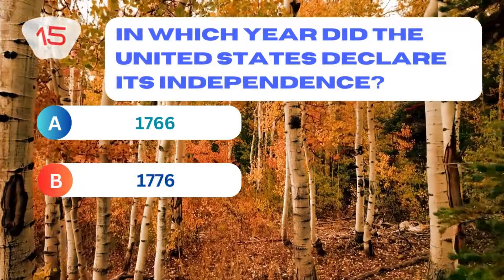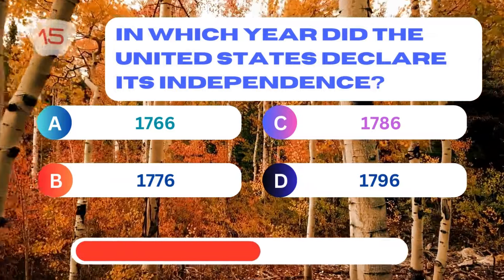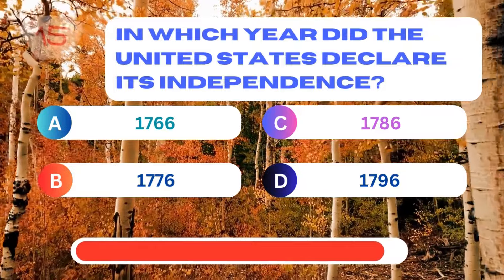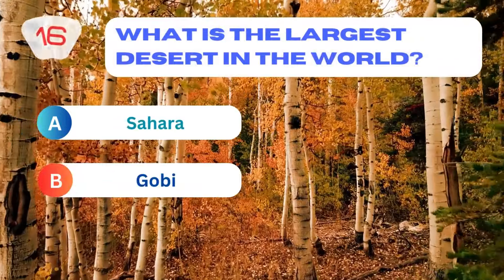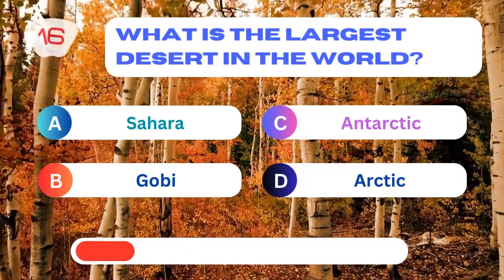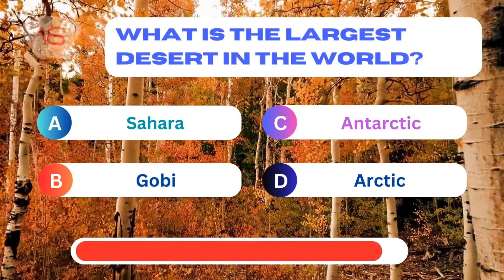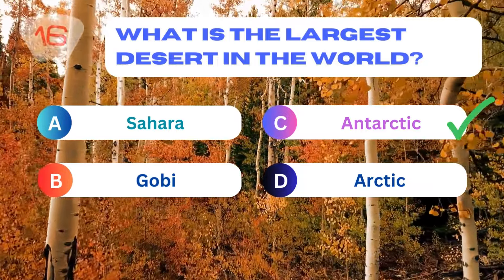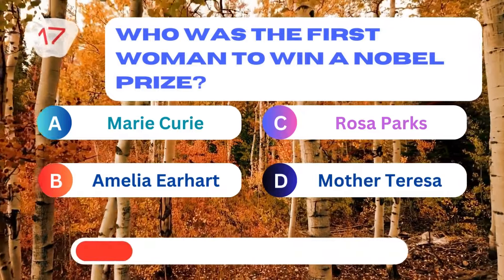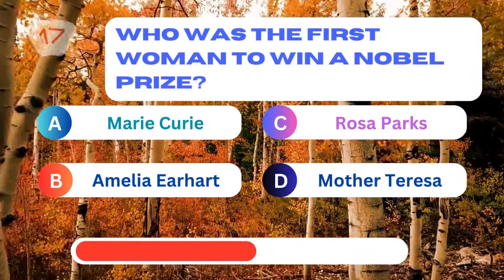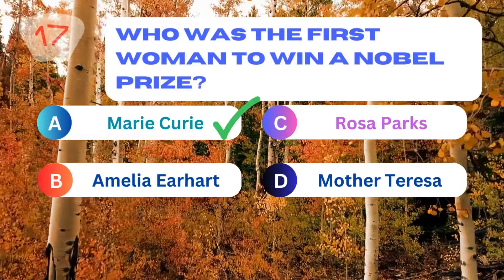In which year did the United States declare its independence? 1776. What is the largest desert in the world? Antarctic. Who was the first woman to win a Nobel Prize? Marie Curie.